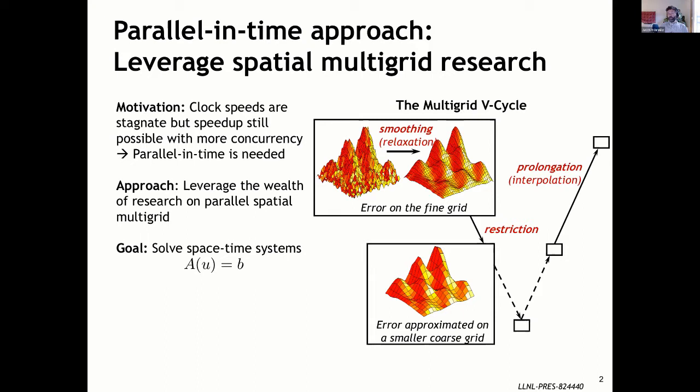Overall, we're solving some global space-time system, usually a nonlinear system A(U) = B. We solve with the multigrid V-cycle. It does some sort of relaxation or smoothing, moves to a coarser grid, and does smoothing or relaxation there, all the way down to a very coarse grid. And then we interpolate an error correction back to the finest grid.